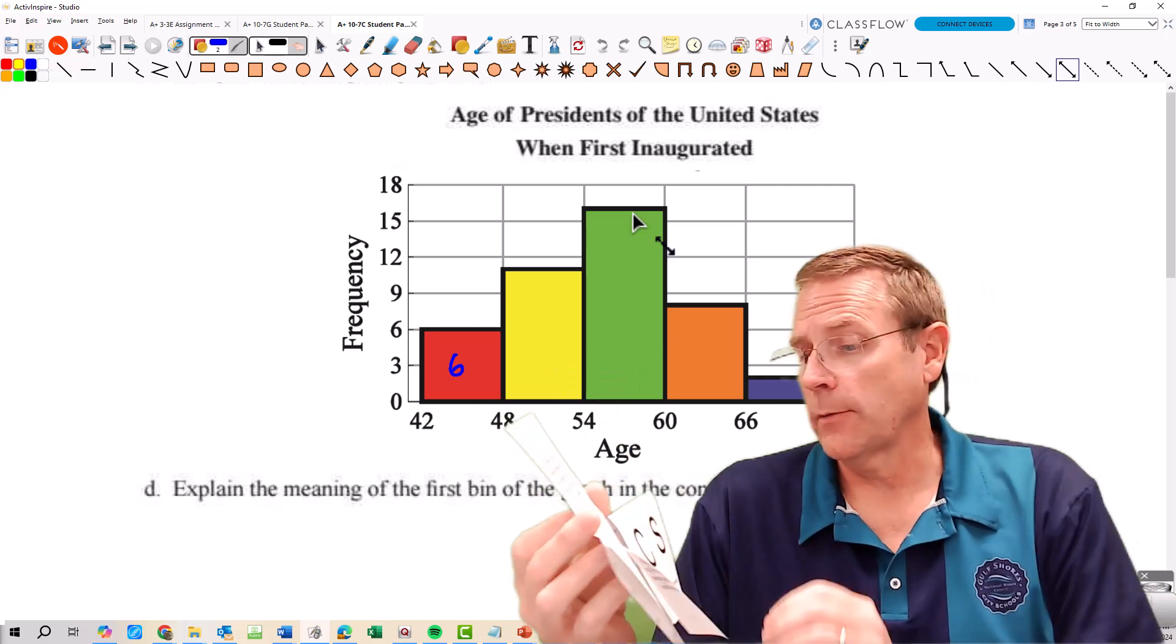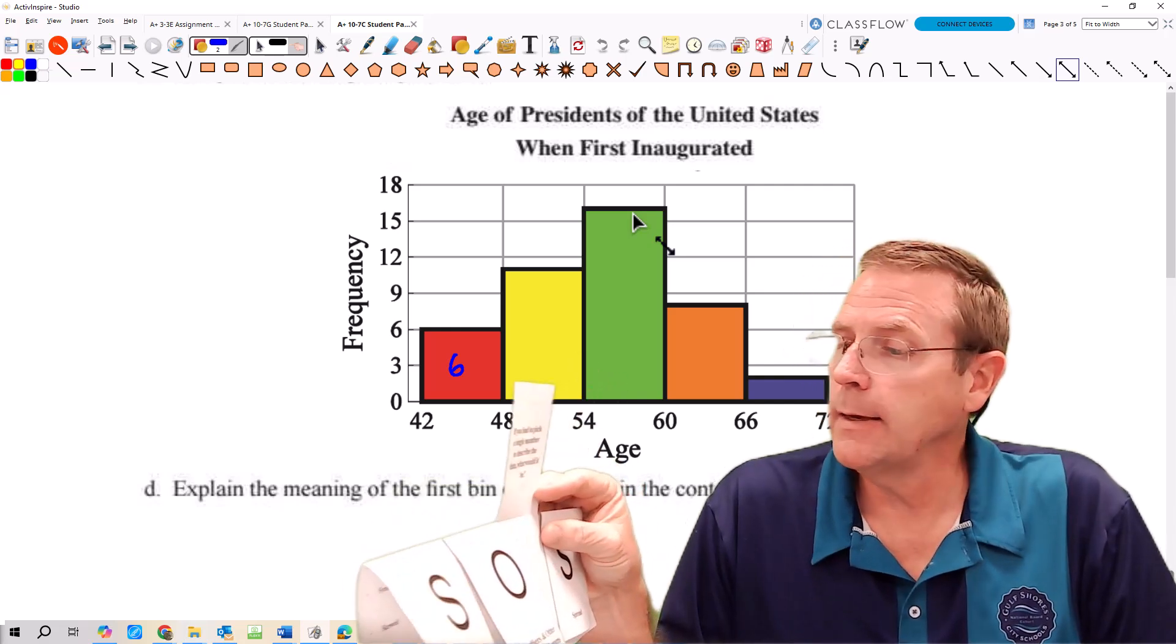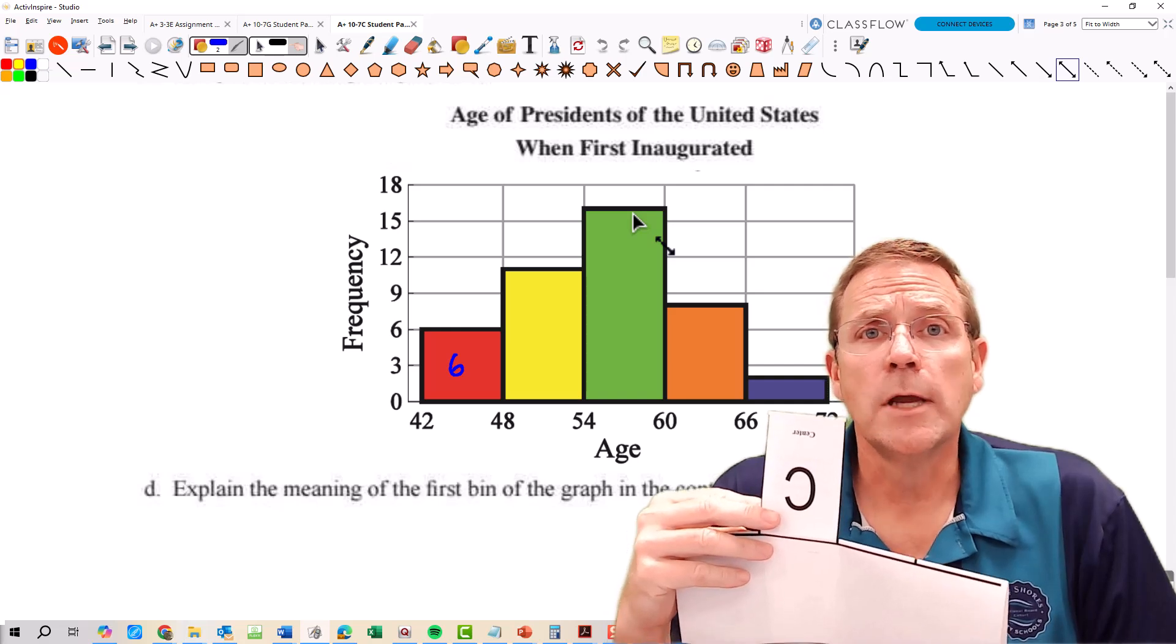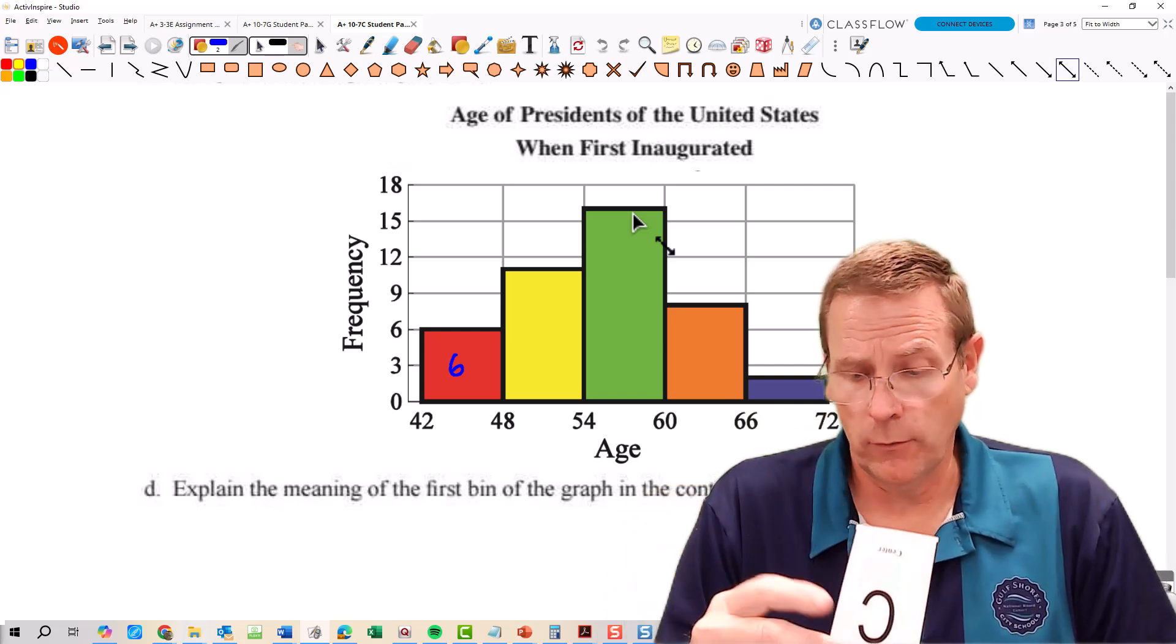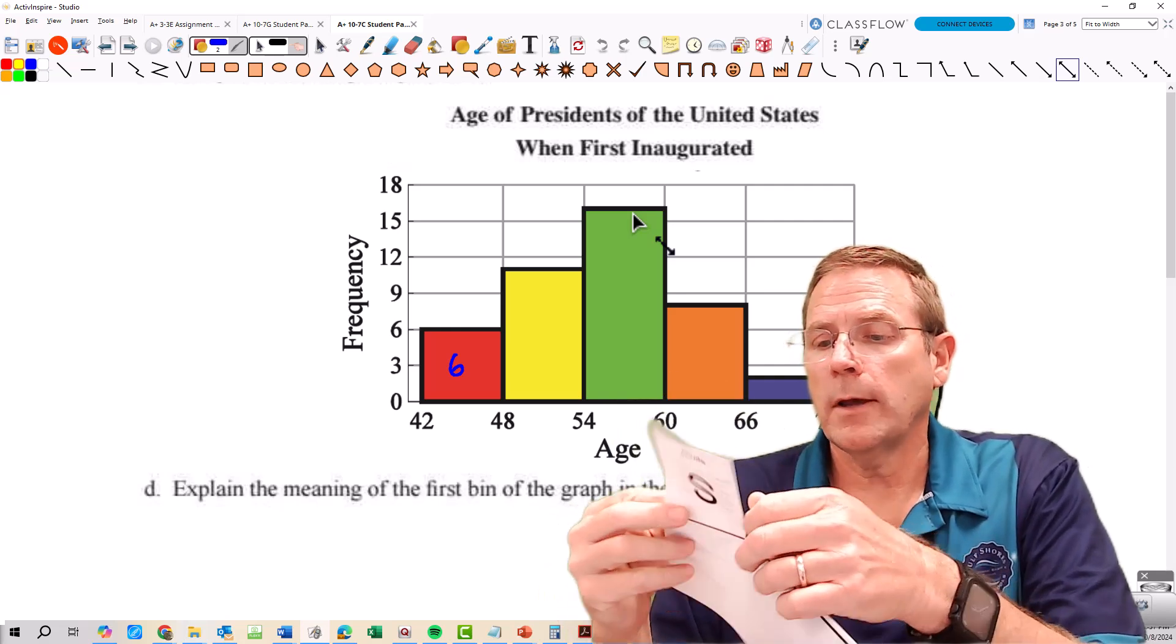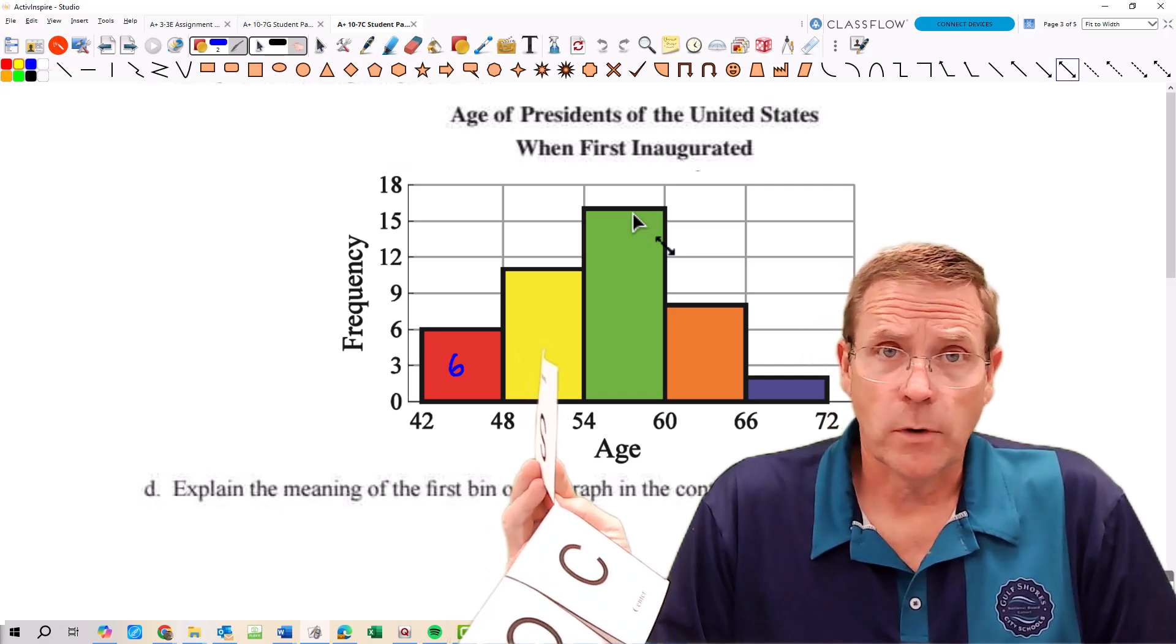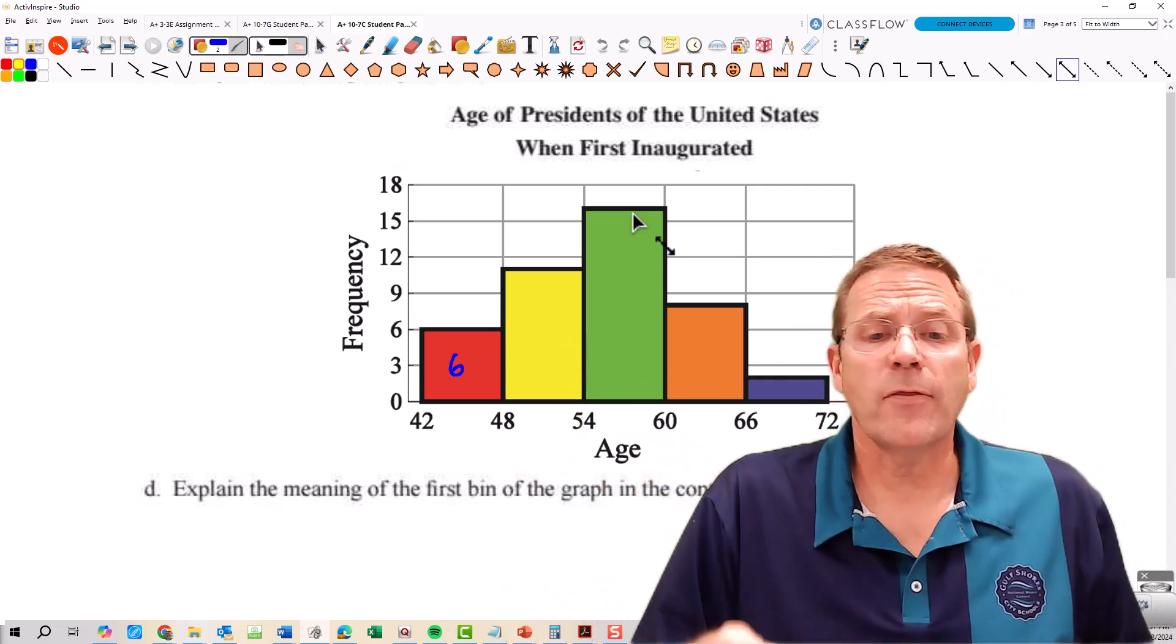Next one, C for center. In the center we say what is the mean and the median? Well we're not going to actually calculate that, but I'm going to bet you the mean and the median both are going to occur about 54 years of age, between 54 and 60 I should say. And finally the last one, S, is going to be the spread. For the spread it wants to know what's the range. Well the range is going to be 72 minus 42, which is a 30 year range.